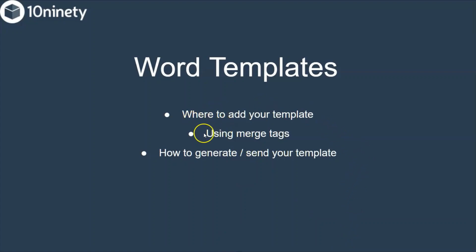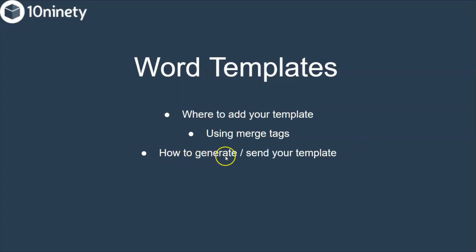We're going to cover three main parts. First, where to add your template into the system. Second, how to use our merge tags — this is how we get the templates to automatically populate. You add the template once using merge tags and then every time you generate a tenancy, for example, your tenancy agreement is ready to go without typing it out each time. Third is how to actually generate and send out that template.